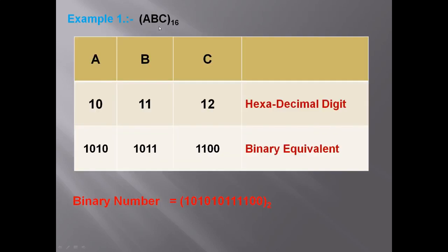Now this is another example. This is a hexadecimal number and we will convert it into a binary number. We will use the number ABC. Then we will write the values from the table. The hexadecimal digit values are: A=10, B=11, C=12. Then we write the hexadecimal-to-binary equivalents.